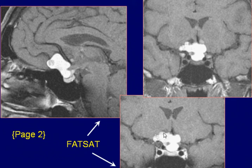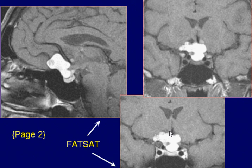There is minimal contrast enhancement along the right supra-margin of the mass, representing some reactive inflammation. MR findings are consistent with an epidermoid, also called a cholesterol cyst.